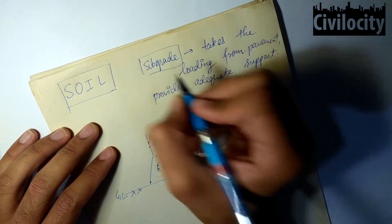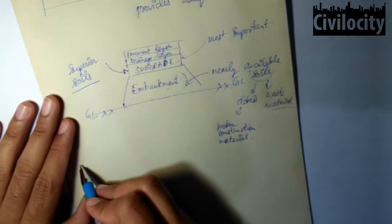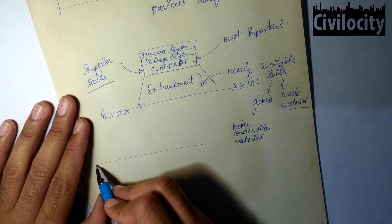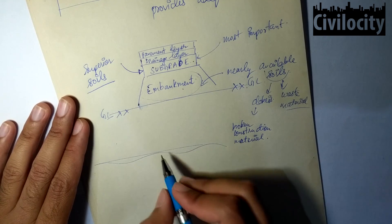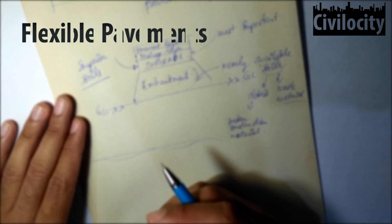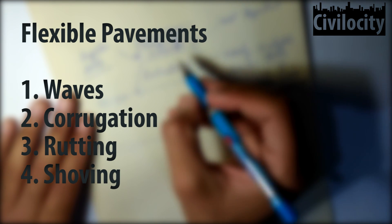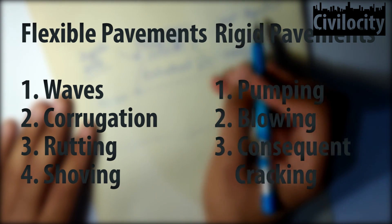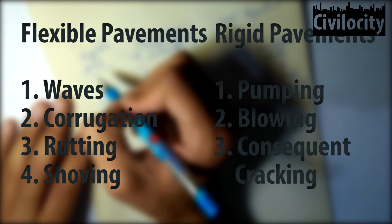What will happen if our subgrade is in poor condition? If you have seen the formation of waves, this is a longitudinal map of a road. This type of waves forming on a road happens due to poor subgrade conditions: waves, corrugation, rutting, and shoving of flexible pavements, whereas the phenomenon of pumping, blowing, and consequent cracking in cement concrete pavements is due to poor subgrade conditions.